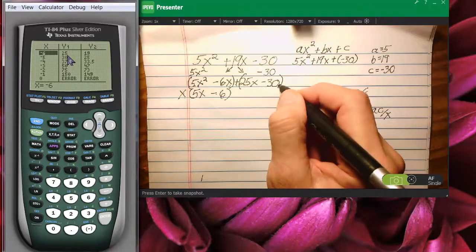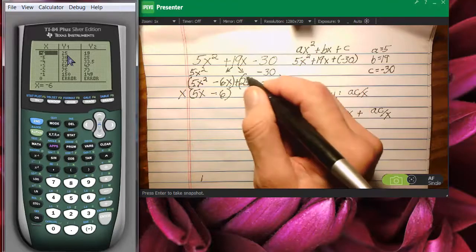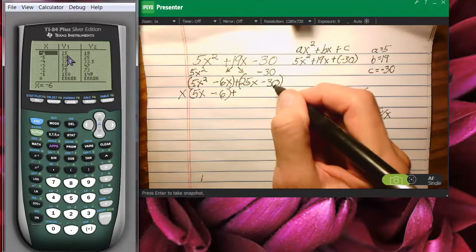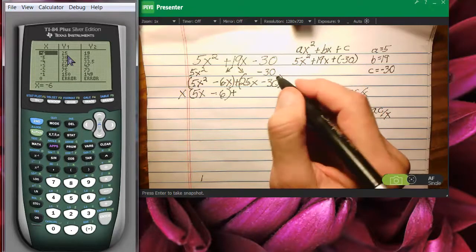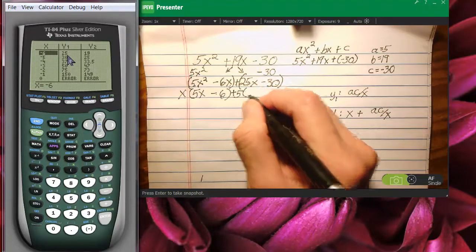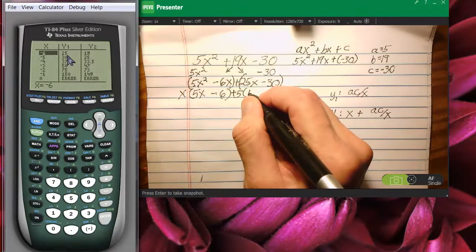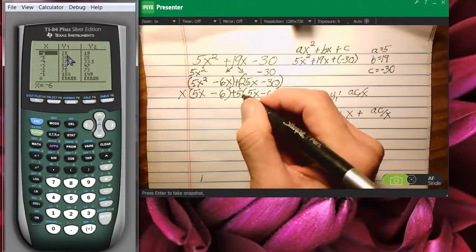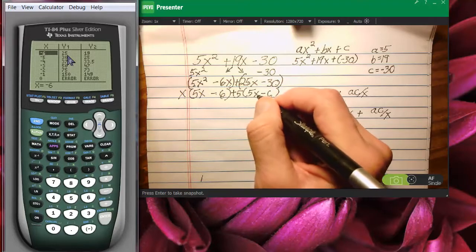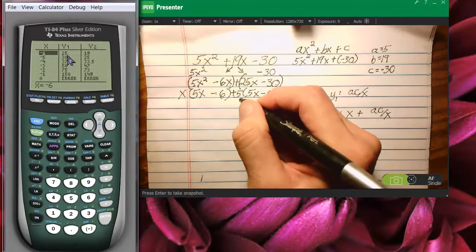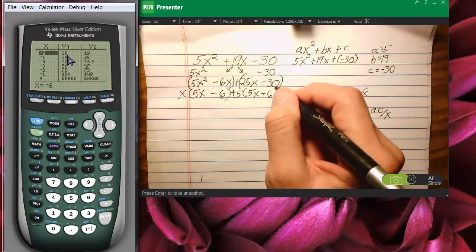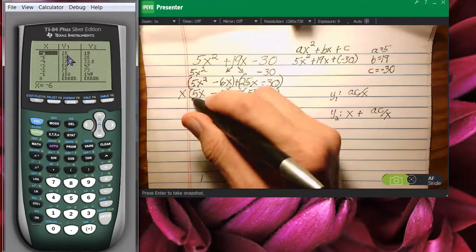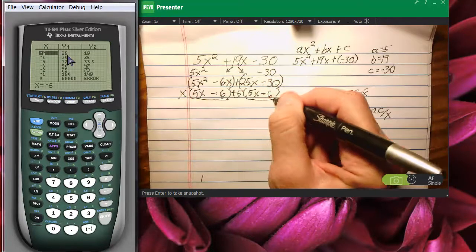Now, I'm going to factor the second two terms, the second set of parentheses, by GCF. And notice that 25 and 30 both have a 5 in them. So I'm going to factor out a 5 to the front. That will leave me with 5x minus 6. Now, how do I know that? Let's go backwards. 5 times 5 times x is 25x, and 5 times negative 6 is negative 30. So that works out. I did this accurately. Now, notice that the 5x minus 6 matches the 5x minus 6.